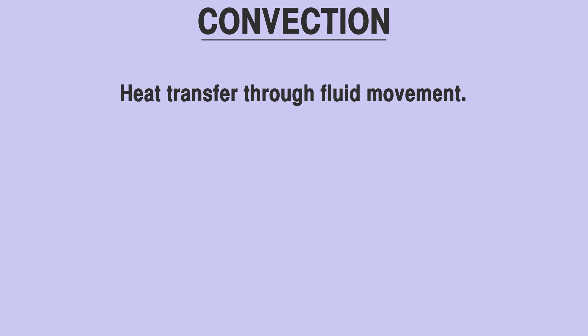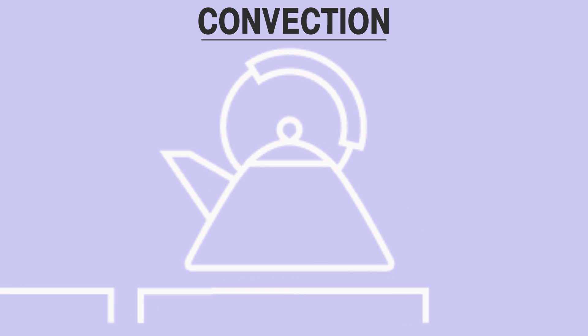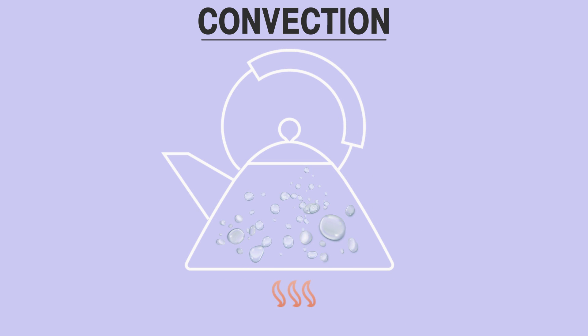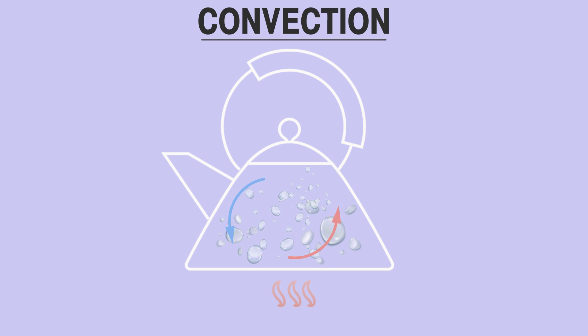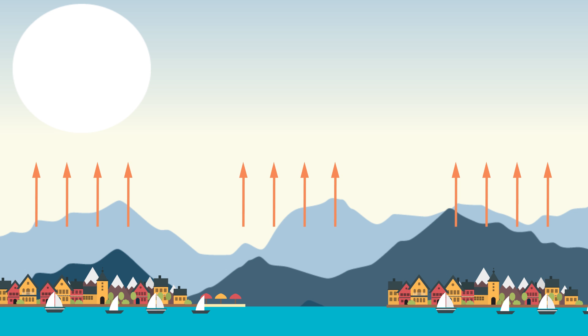The second pathway is convection, a transfer of heat by the movement of liquids or gases. An example of this is the transfer of heat through boiling water in a pot on the stove. As the water near the heat source increases in temperature, it moves into cooler areas and exchanges heat with the cooler water. This same process can occur in air masses over the Earth's surface and is a major driver in the formation of clouds and thunderstorms.